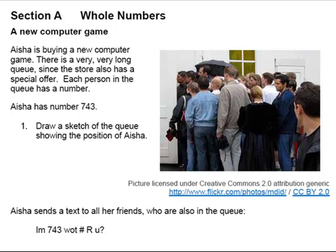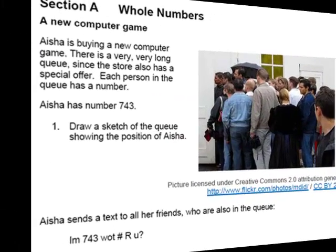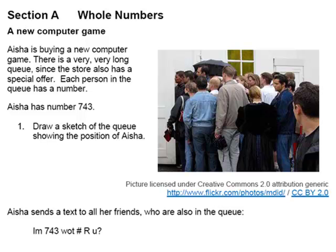So the first question is draw a sketch of the queue showing the position of Aisha. Aisha has number 743. What I'd like to do is actually have a go at that yourself. When we've asked pupils to do this they have drawn a sketch with varying degrees of detail. Sometimes there are stick people, sometimes they've got themselves in the queue. And I think a natural reaction when you're faced with a question like this is almost to think why am I doing this? What's the point in doing this? And you've just got to kind of go with that initially. So you'll get various versions of the queue, sometimes the queue is snaking, sometimes it is just in a line.